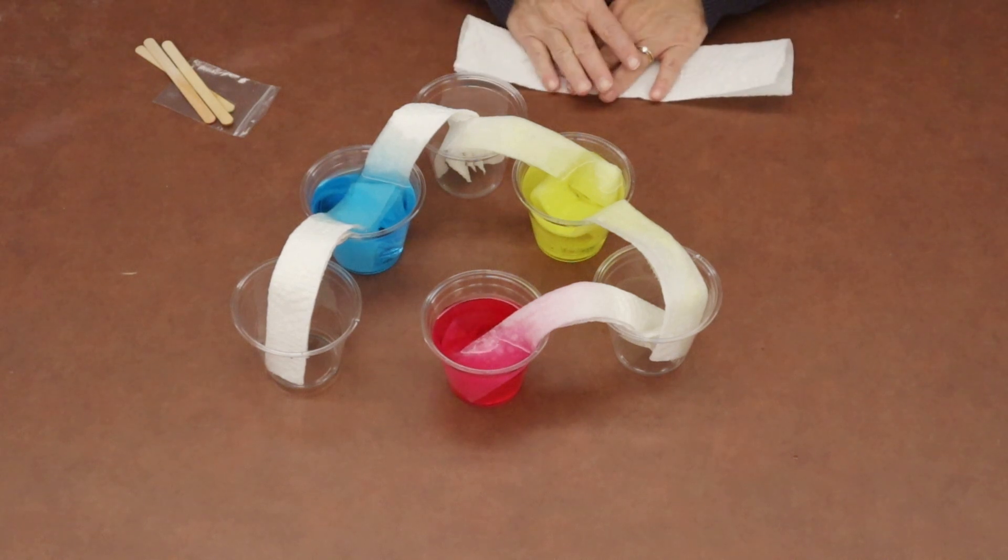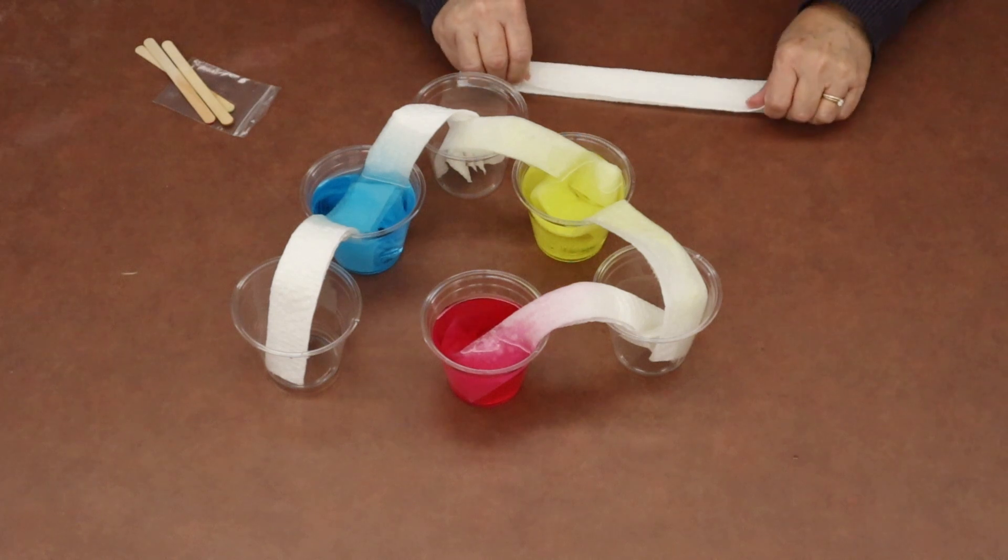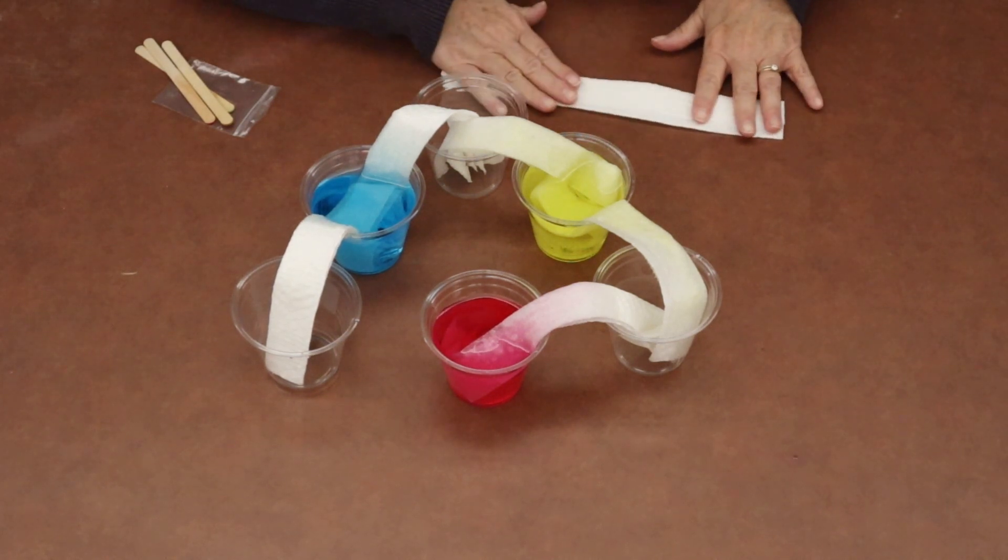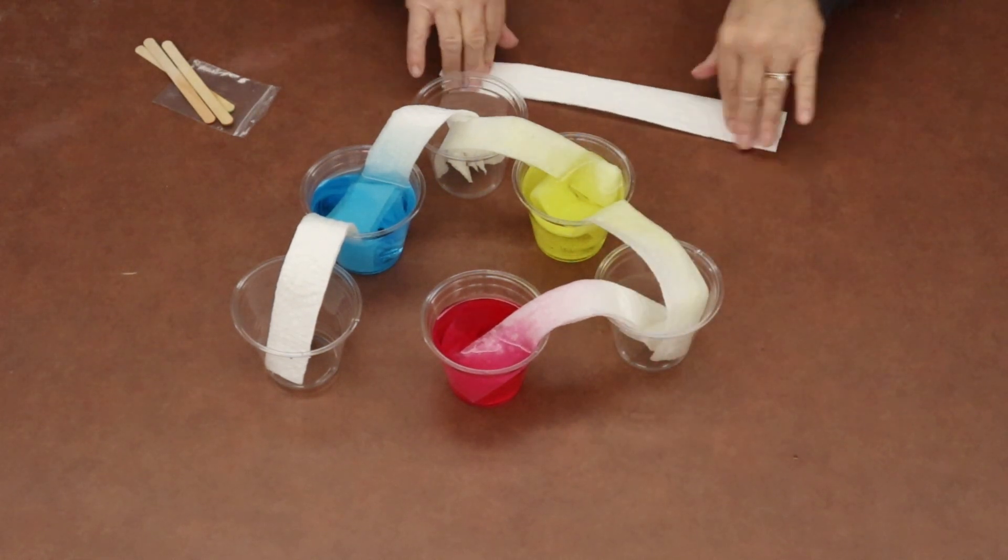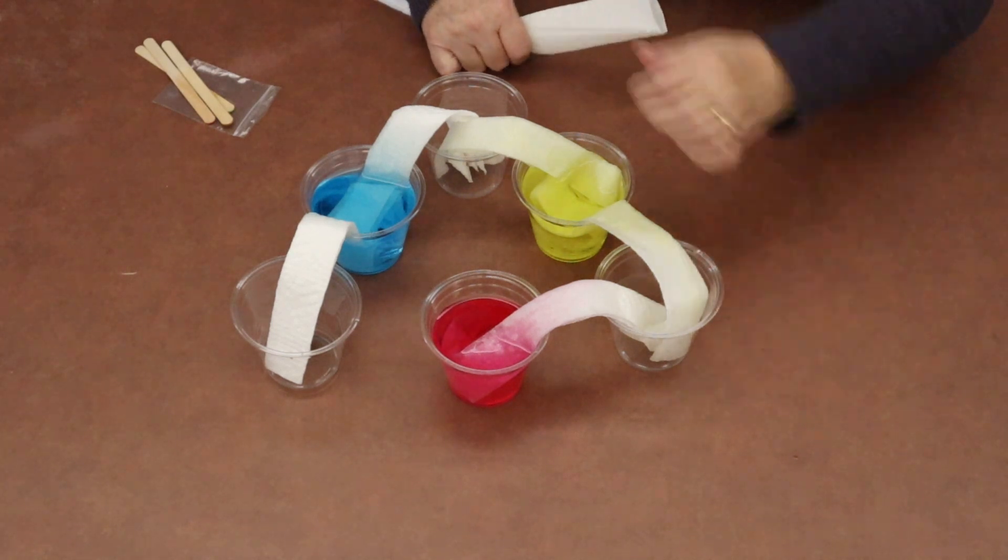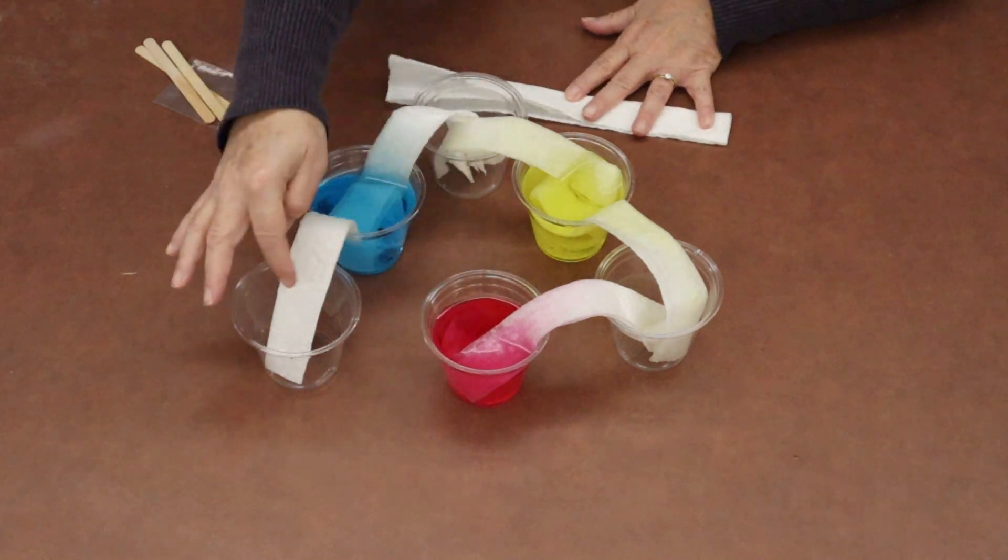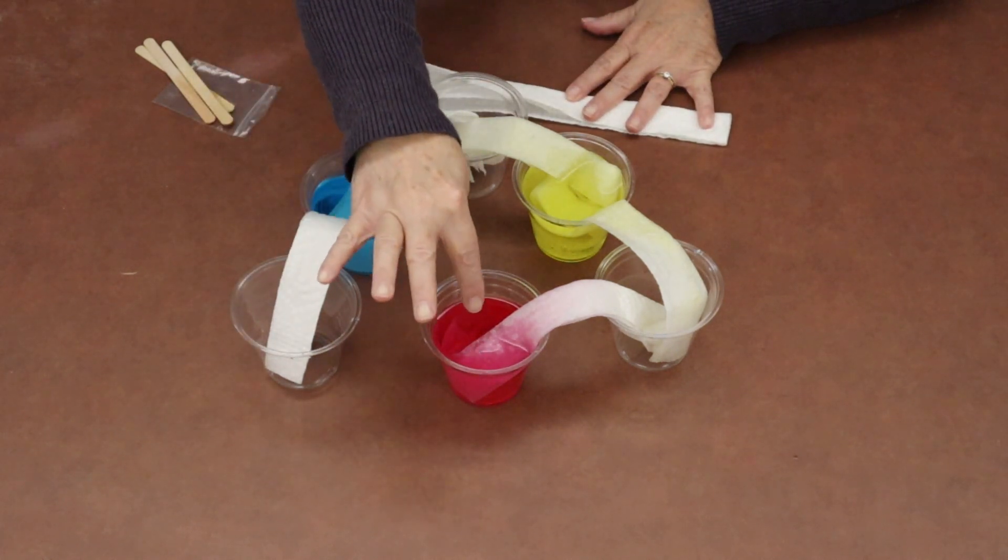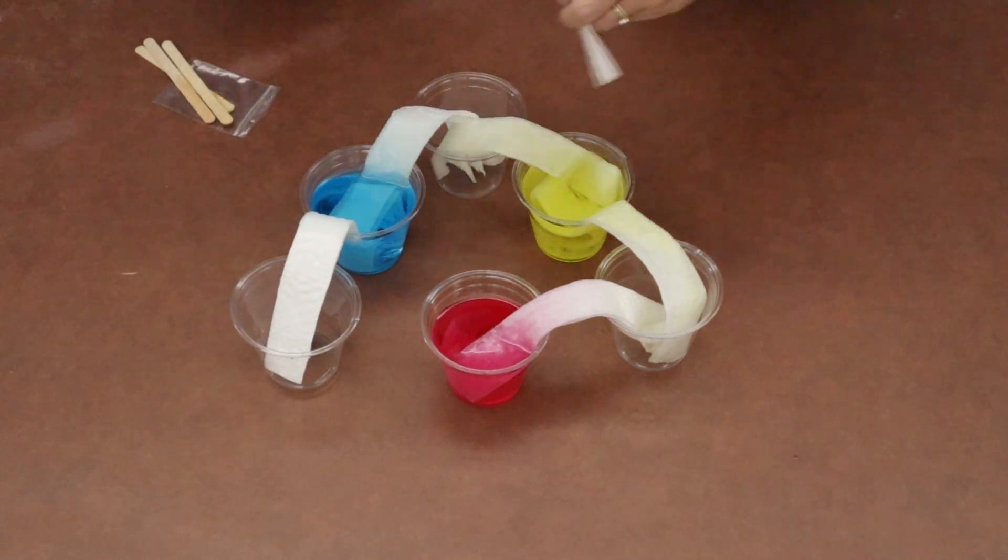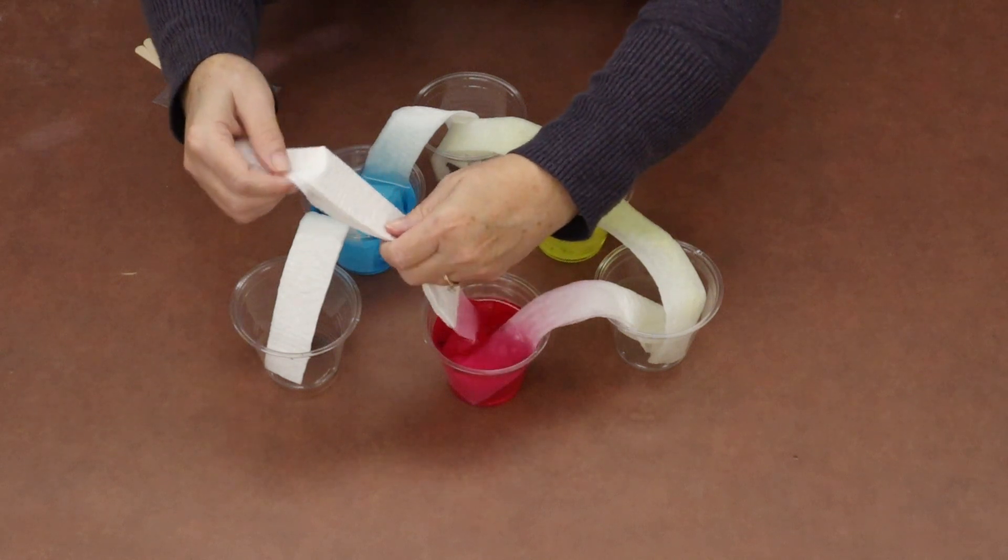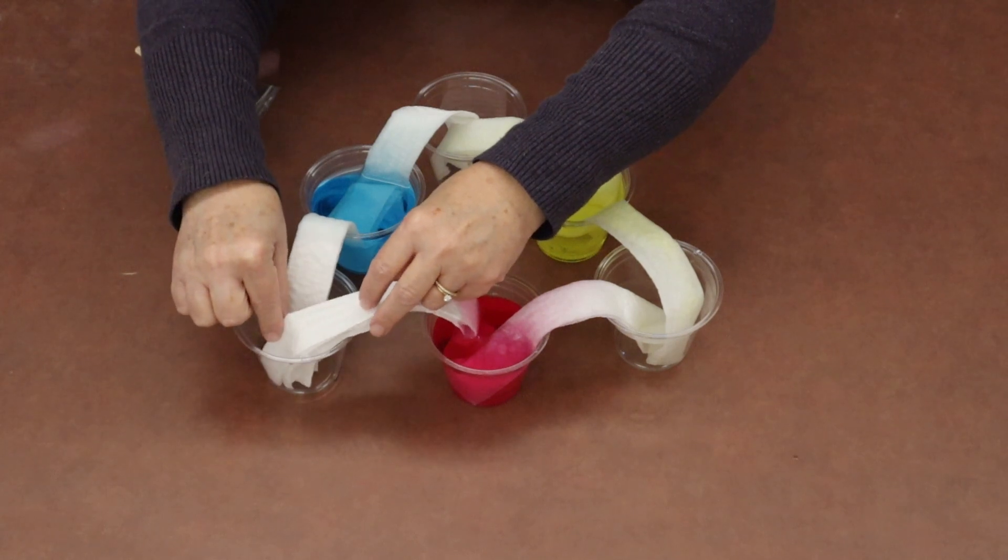Now I'm going to put one end of this one in the blue and one end in this cup that's got the yellow already, and the other end in this empty cup. It's kind of fun to watch how fast the water is moving down the paper towel. For my last paper towel, we'll put this one in the red and then put this one in the one that's going to meet the blue.